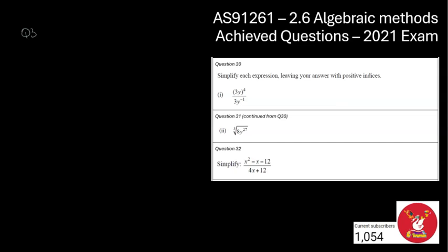I'm now on to question number 32. Down the bottom there, I've got a quadratic fraction, and I've been asked to simplify that. So let's jot down my expression. So I've got x squared minus x minus 12, and that is divided by 4x plus 12.